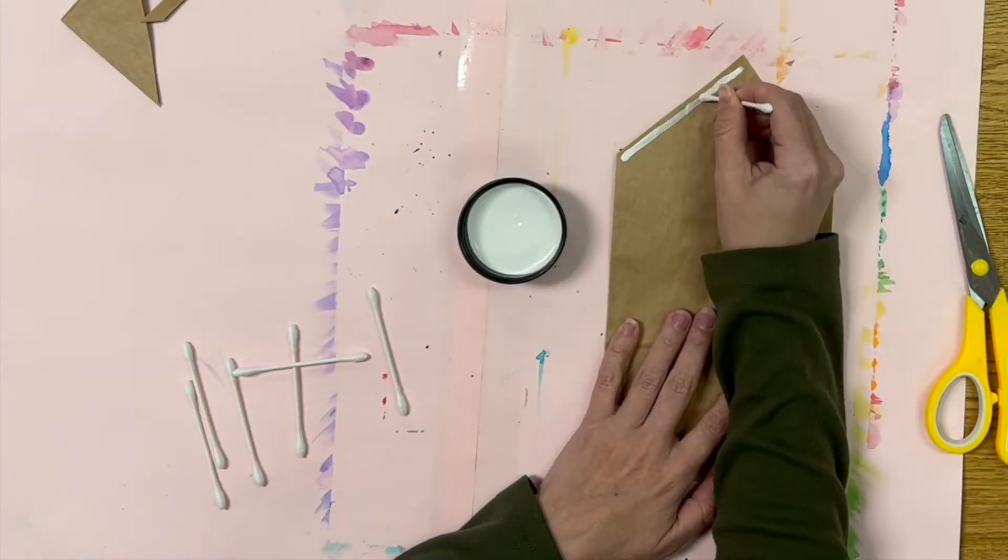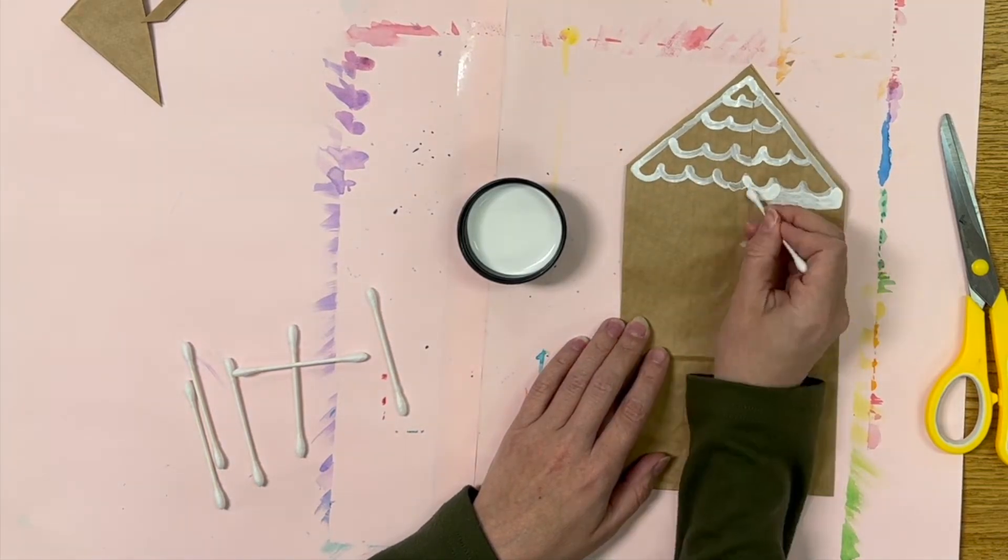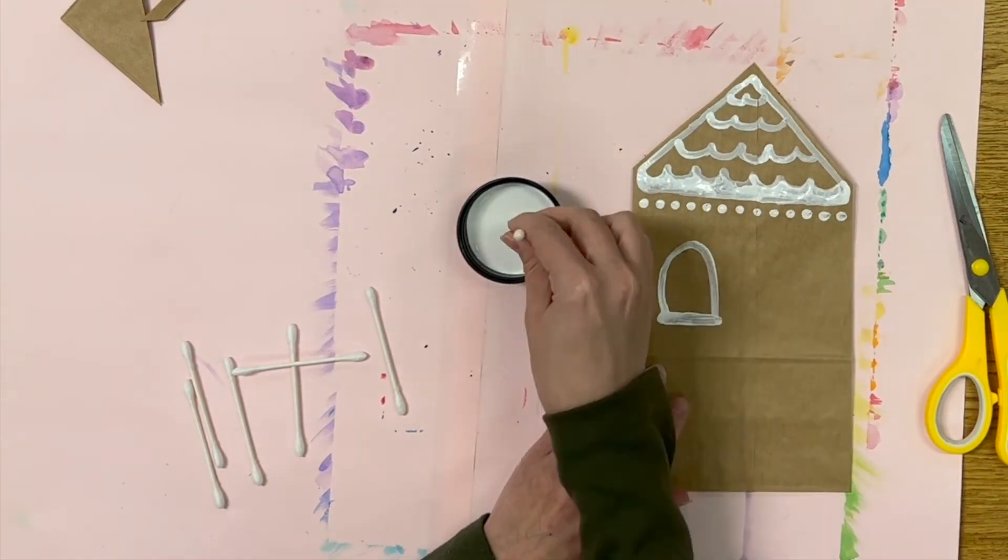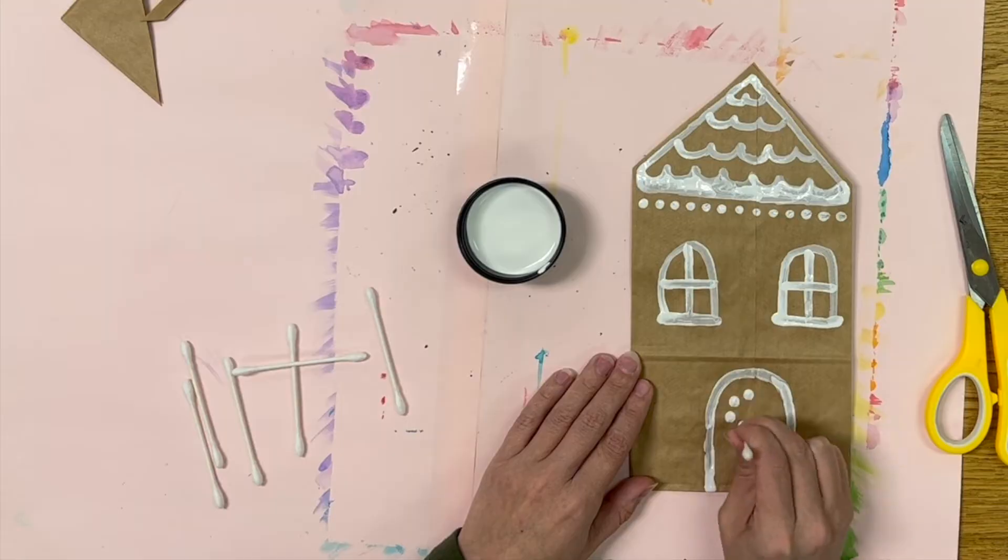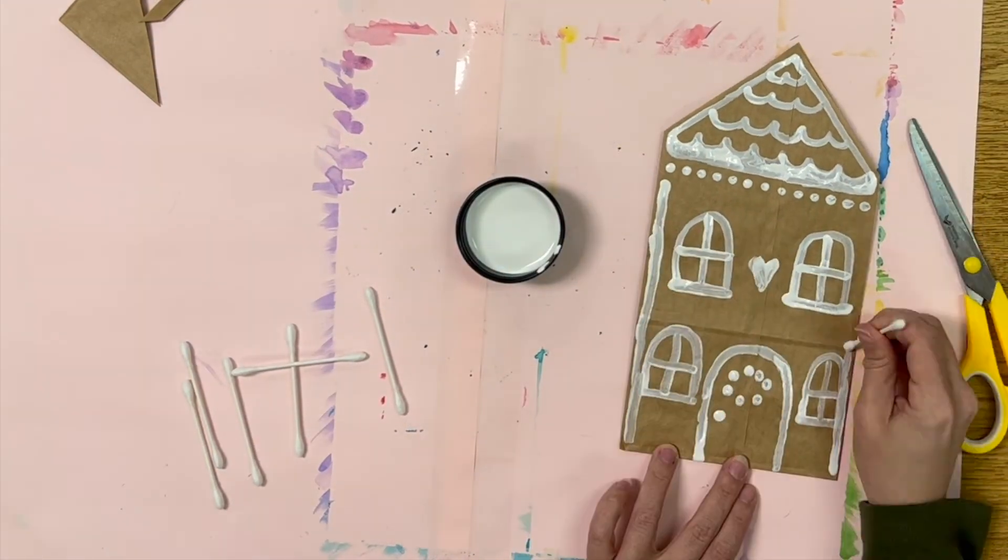Here is another example of a different kind of design. This one uses scalloped wavy lines to make the shingles on the roof. You will also notice a nice wreath on the door.